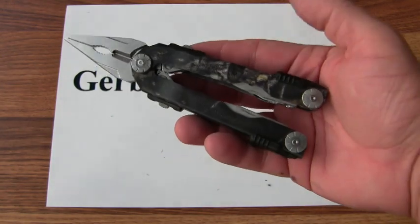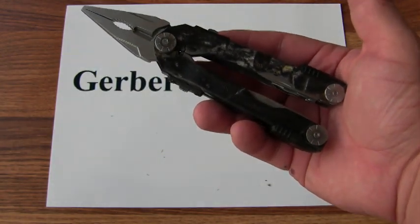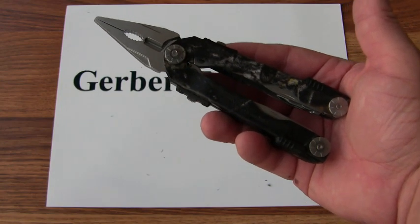This is the Gerber Diesel mossy oak camo version, model 22-41380.